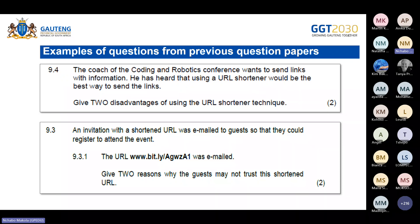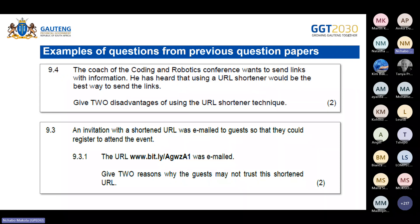Some shortened URLs may appear as spam and cannot be trusted by the person receiving them. Question 9.3 from another paper: an invitation with a shortened URL was emailed to guests so they could register to attend the event. 9.3.1 asks for two reasons why guests may not trust this shortened URL. If you compare this to the previous question 9.4, both are essentially looking at the disadvantages of URL shorteners, just posed in two different ways.